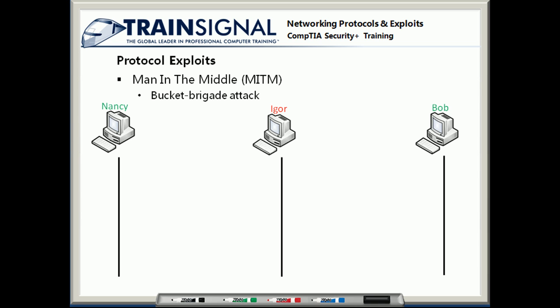Here's how this is going to take place. On this network, I have Nancy, who wants to securely talk with Bob. Igor in the middle is going to be the bad guy, and he's going to intercept their messages.